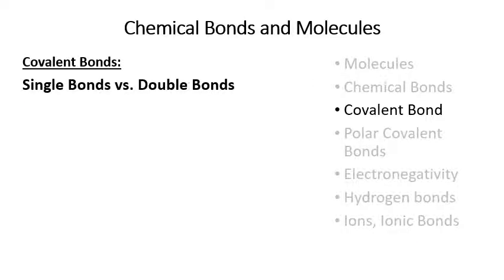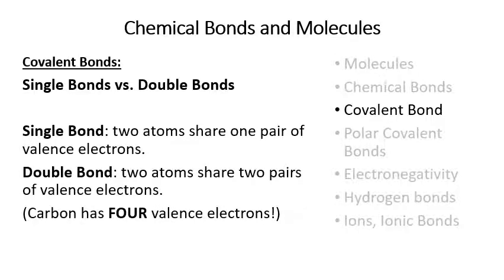A single bond is where two atoms share one pair of valence electrons; a double bond is where two atoms share two pairs. Carbon has four valence electrons, so it could form four single bonds with four other carbons, or it could form a double bond with another carbon — that uses two valence electrons — and then each carbon in that molecule could form single bonds with two hydrogens. Carbon can also form double bonds with oxygen. You could take one carbon atom and connect it to two oxygens through two double bonds to make CO₂.